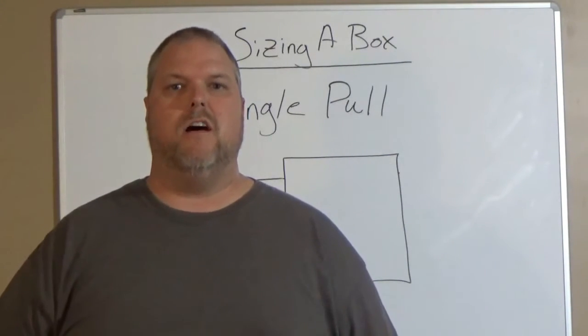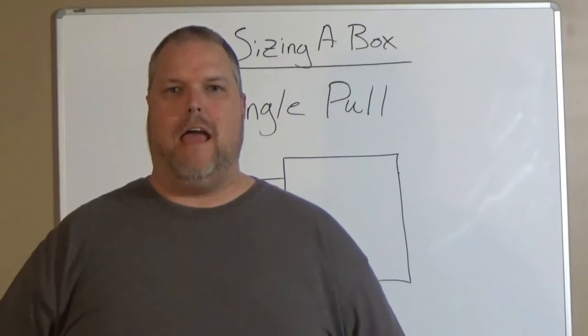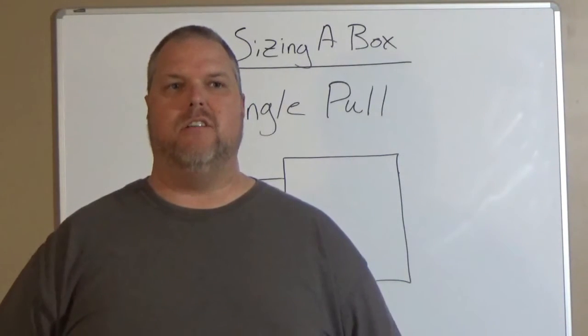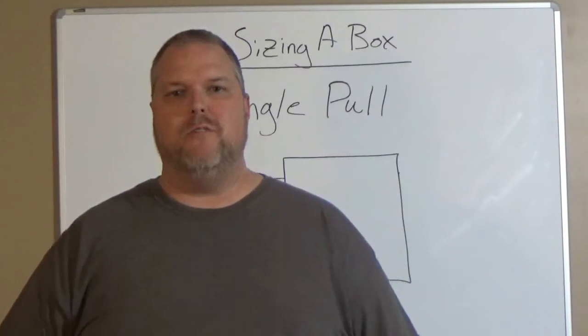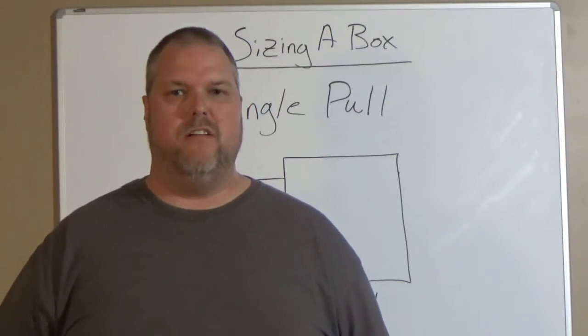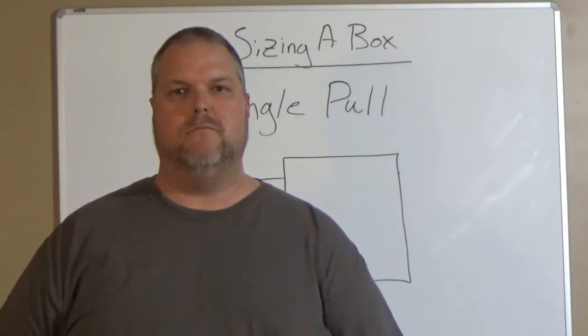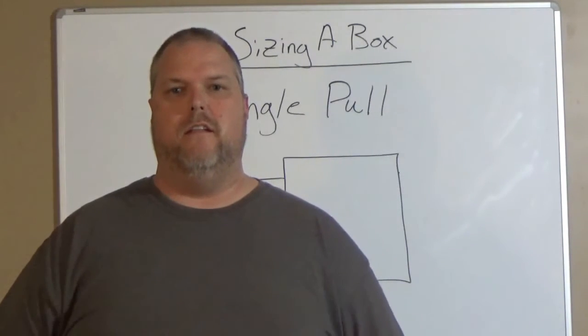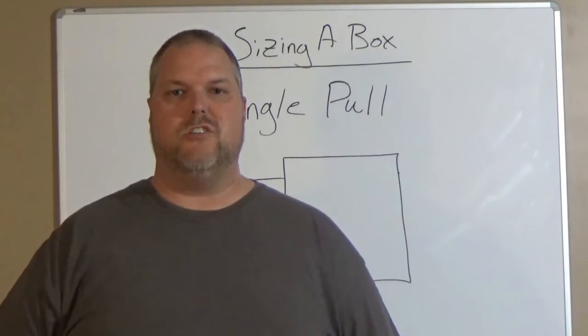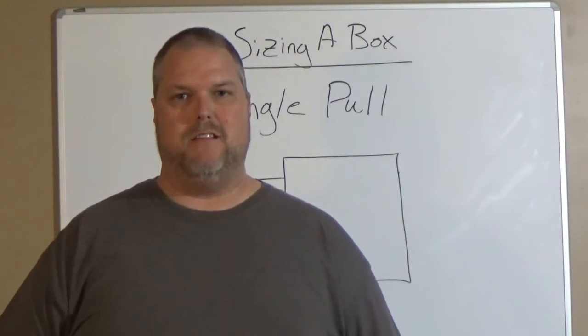We are going to now discuss Article 314.28A2, which covers angles and U pulls. How do we size a junction box? Very simple. You have to remember two rules. If it's a straight through pull, you're going to multiply the largest conduit by 8. In an angle pull, you're still going to multiply the largest conduit, but instead of multiplying it by 8, you're going to multiply it by 6.